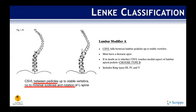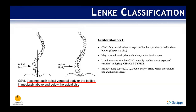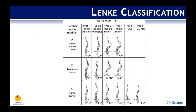The Lenke classification breaks curves into types one through six, with lumbar modifiers that are very important for surgical recommendations. Lumbar modifier A indicates relatively mild scoliosis where the CSVL falls between the pedicles. Lumbar modifier B is where the CSVL touches the medial border of the concave pedicle at the apex — if in question, choose modifier B. Lumbar modifier C is a more severe scoliosis where there is no contact between the apical vertebral body and the CSVL.